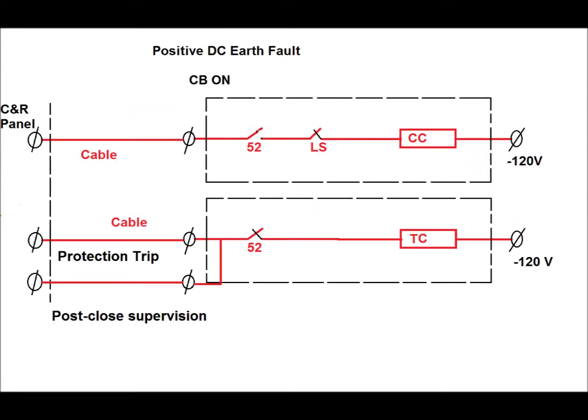From the control and relay panel there exists one cable to the closing circuit of the circuit breaker, and from the CRP panel there exists a protection trip cable to the trip circuit of the circuit breaker. One also exists for post-close supervision cable and another for pre-close supervision, which I have not shown in this diagram. During normal operation all the DC is healthy — there is no earth fault — and negative voltage, that is minus 120 volt, will be at one terminal of the closing coil and trip coil as shown in this diagram.